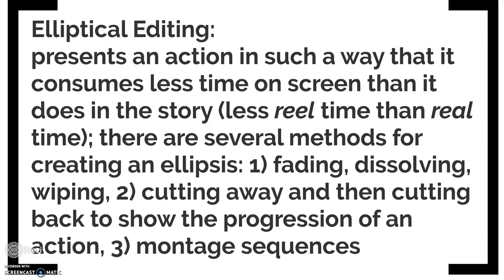There are several different ways for creating an ellipsis. You can fade, dissolve, or wipe — all three of those transitions imply that time has passed. You can cut away and then cut back to show the progression of an action. For example, you might have a character at the bottom of a set of stairs, cut away, and when you cut back he's at the top. We know he didn't teleport — he walked all the way up — but we don't have to see the entire flight of stairs. Or you can use a montage sequence.